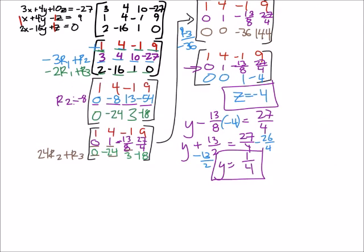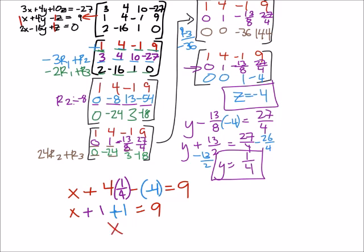All right. Then we had that top equation, which we never actually changed. So we're going back to the original second row. We got X plus four Y minus Z equals nine. But now we got Y is one fourth. So if we combine these, it looks like we'd get X plus one. Well, plus one actually equals nine. So I get X. I skipped a couple steps, but X is seven. That's what I got.